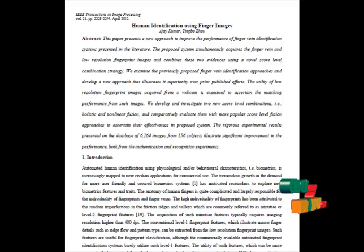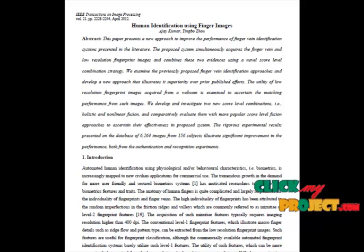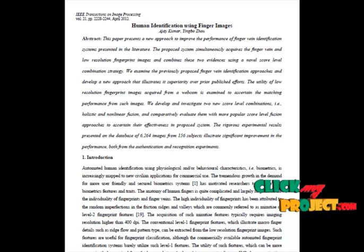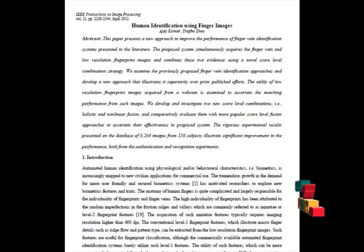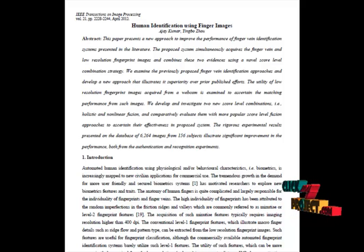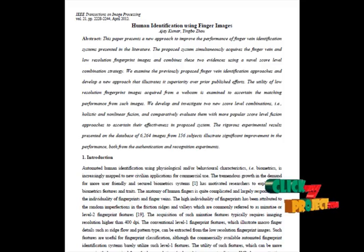We extract the ROI region, after which we extract the vein pattern by minimum-maximum curvature. From the segmented cell we extract features for both the texture and the vein image. We extract the Gabor features for the input images. Gabor filters are similar to those of the human visual system and have been found to be particularly appropriate for shape representation and discrimination.